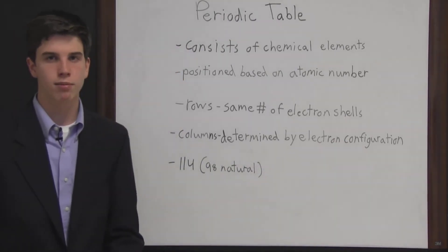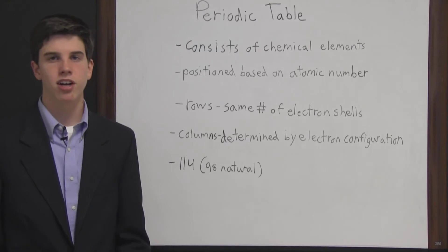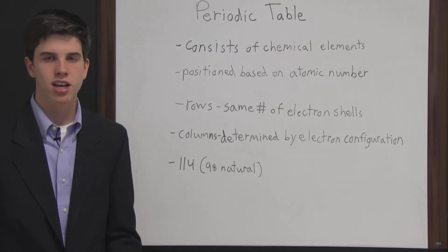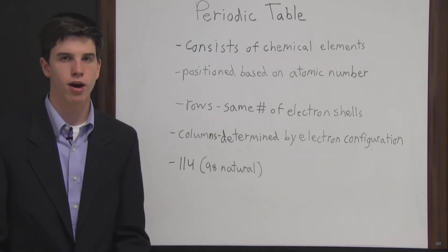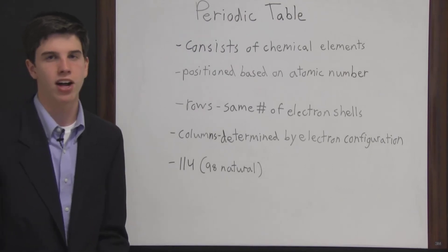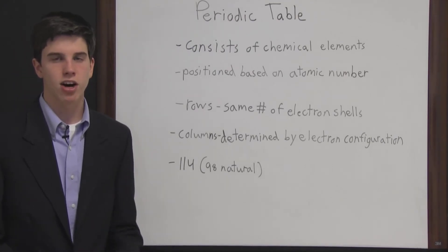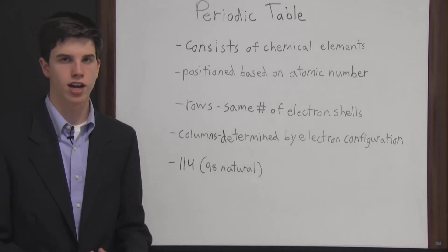So the periodic table arranges the elements in such a way that all the elements are next to similar elements. So if a scientist knew a lot about one element, he could know a lot about the elements around it just because all the elements are grouped together with similar elements.